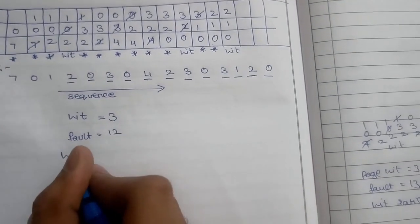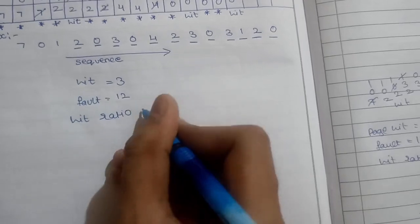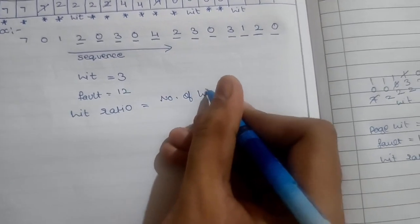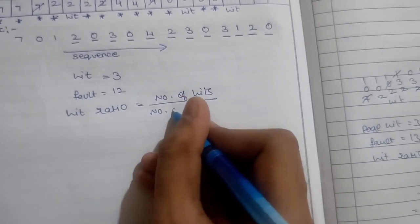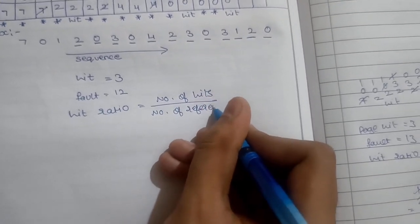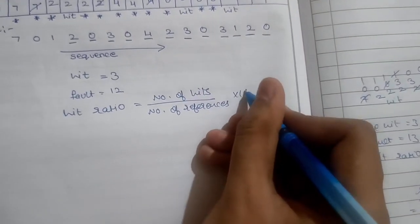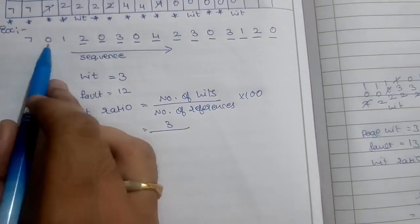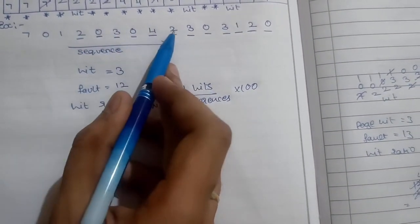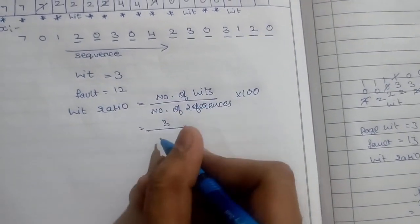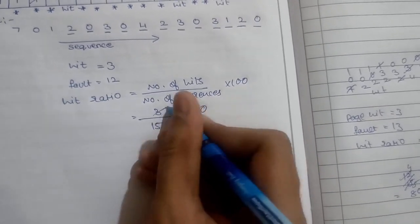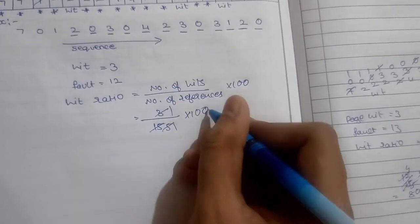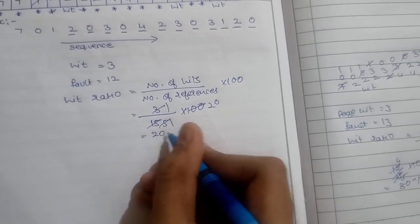Now I'll calculate the hit ratio. The formula for hit ratio is number of hits divided by number of references. Hits are 3 into 100. So 3 divided by overall references. Total references are 15, so 3 divided by 15 into 100 equals 20%. This gives us a 20% hit ratio.